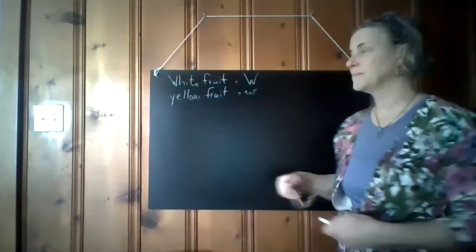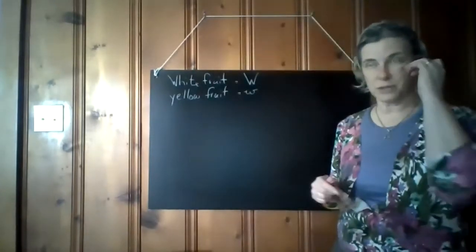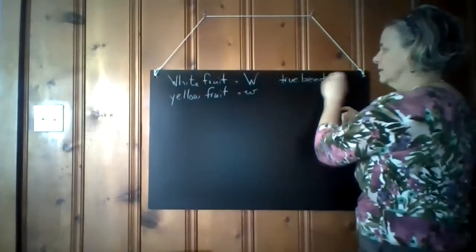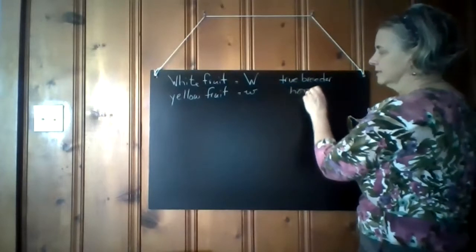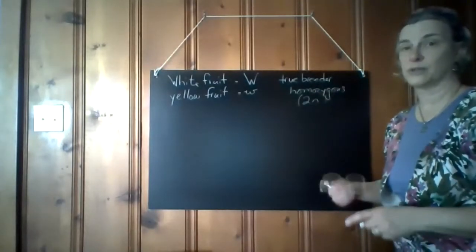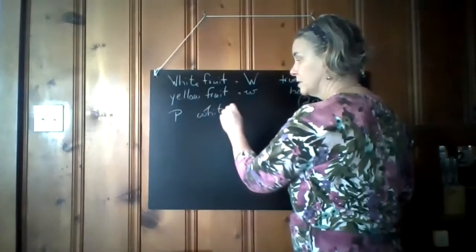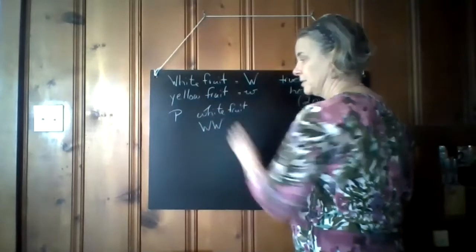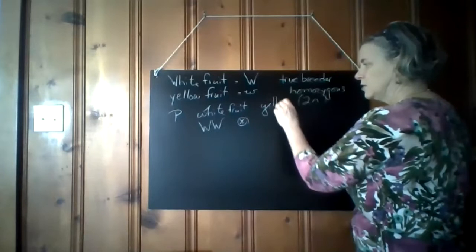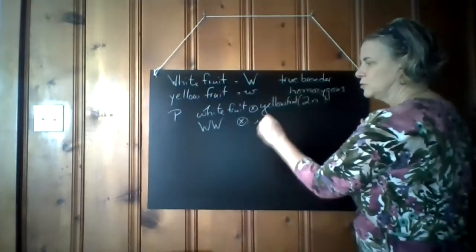For these problems, use uppercase for the dominant allele and the same letter lowercase for the recessive allele. Write it at the top of your paper so you don't have to remember it. Capital W = dominant allele, white fruit; lowercase w = recessive allele, yellow fruit. Now, the problem states: a true breeding white squash crossed with a true breeding yellow squash. A true breeder is homozygous — they have two copies of the same allele. So the white parent is WW and the yellow parent is ww.